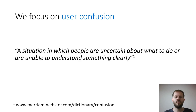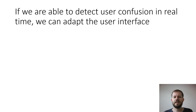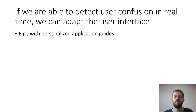In our work, we focused on user confusion, which we define as a situation in which people are uncertain about what to do or are unable to understand something clearly. If we were able to detect user confusion in real time, we could adapt the user interface and thus improve user experience — for example, with the help of personalized application guides.